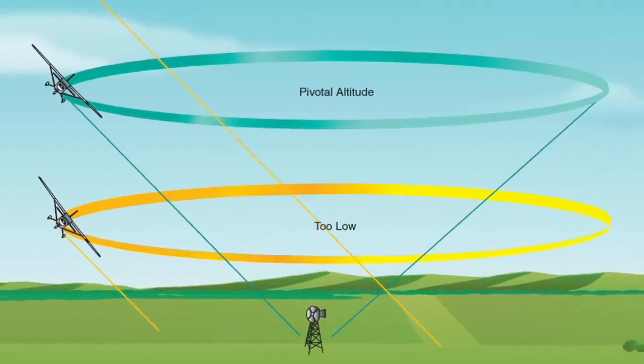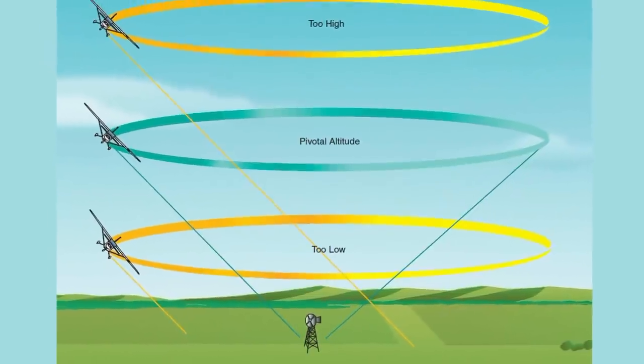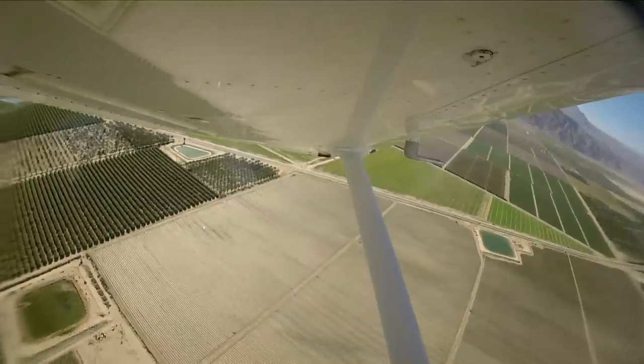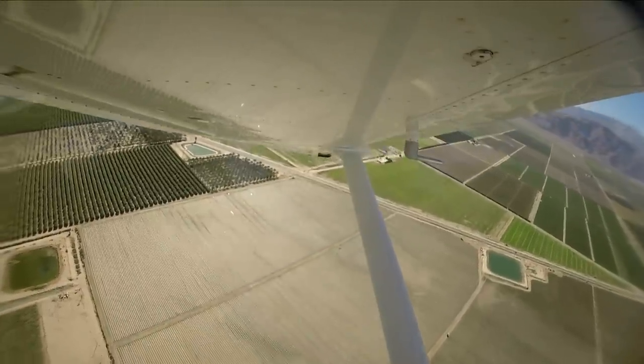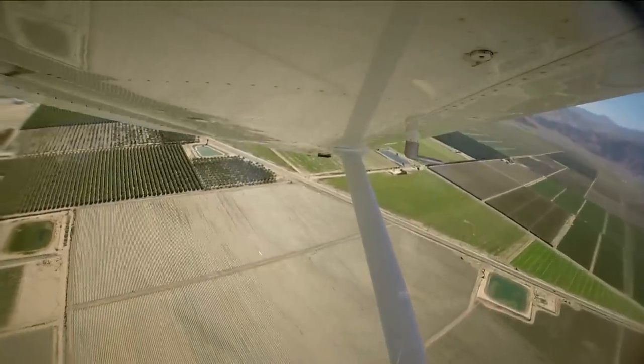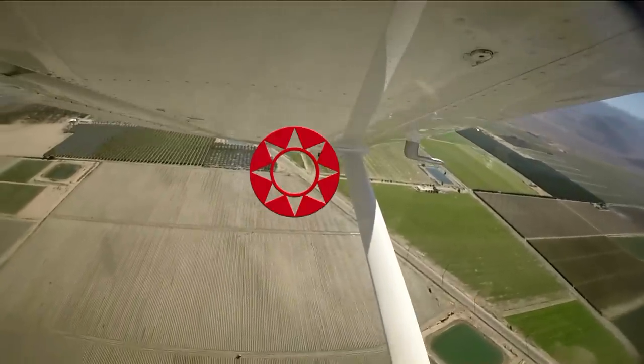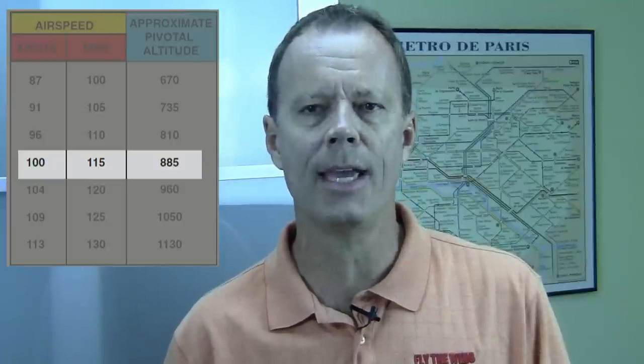The airplane is flown at such a precise altitude and airspeed that a line parallel to the airplane's lateral axis, extending from the pilot's eyes, appears to pivot on each of the two pylons. Pivotal altitude is governed by the ground speed — it's not the wingtip per se, but a line parallel to the lateral axis that we're sighting. A rule of thumb is to square the true airspeed in knots and divide by 11.3. This chart makes it easy to convert several common airspeeds to the appropriate pivotal altitude. Today we're going to use 100 knots, requiring a pivotal altitude of about 900 feet AGL.